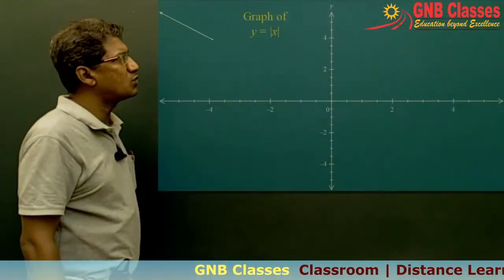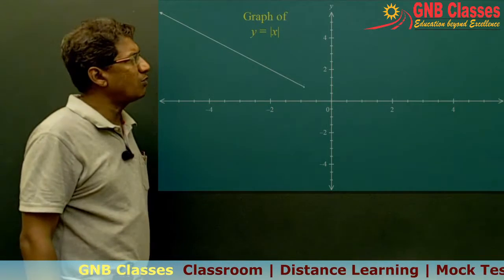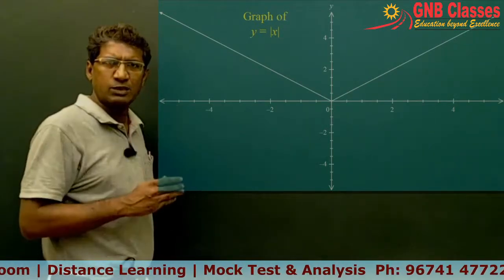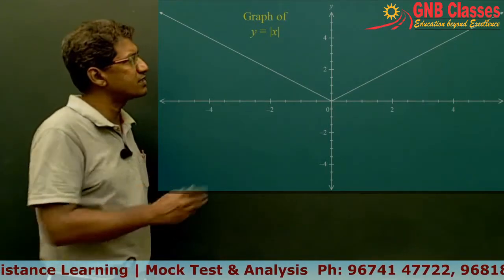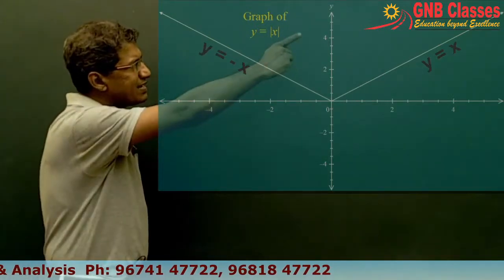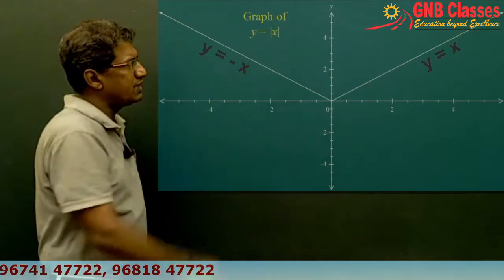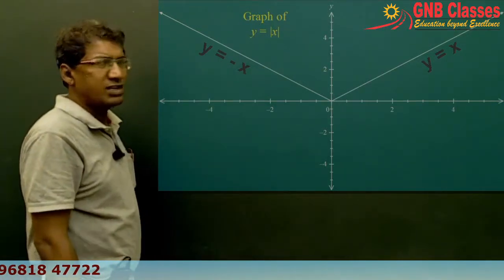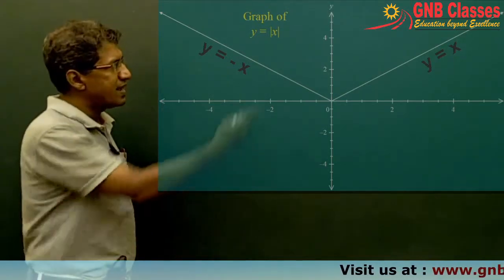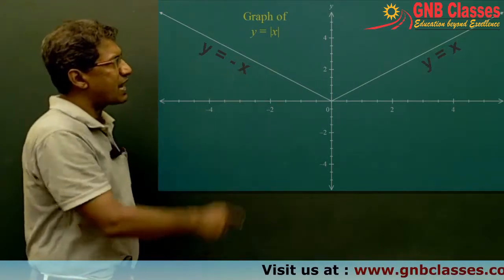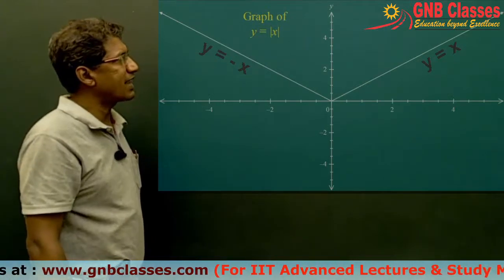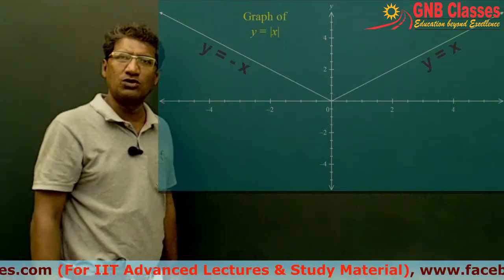The third basic graph is y = |x|. We have done this in special functions. The graph of |x| looks like a V-shape: the right-hand side line has equation y = x, and the left-hand side line has equation y = −x. This is the graph of y = |x| as a whole.